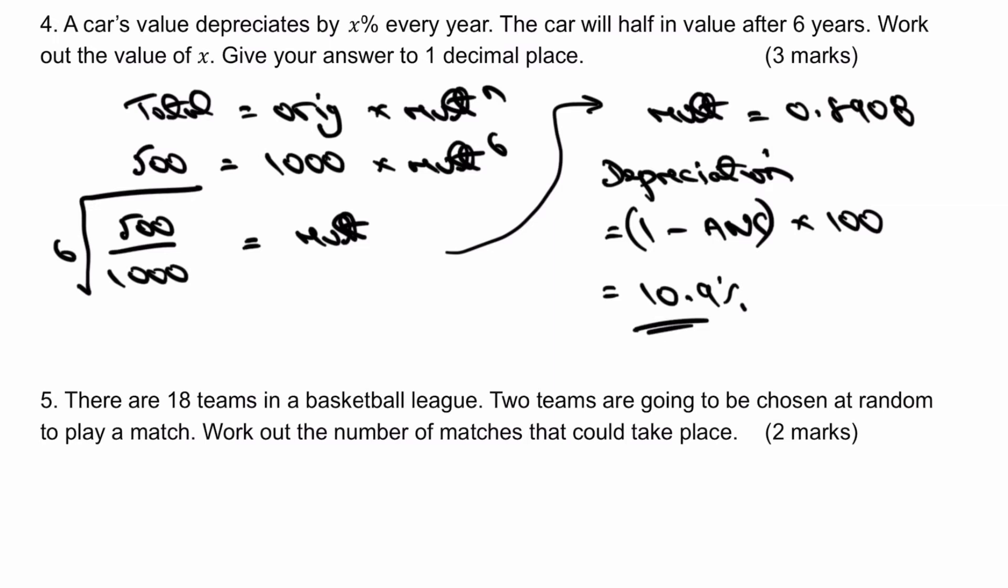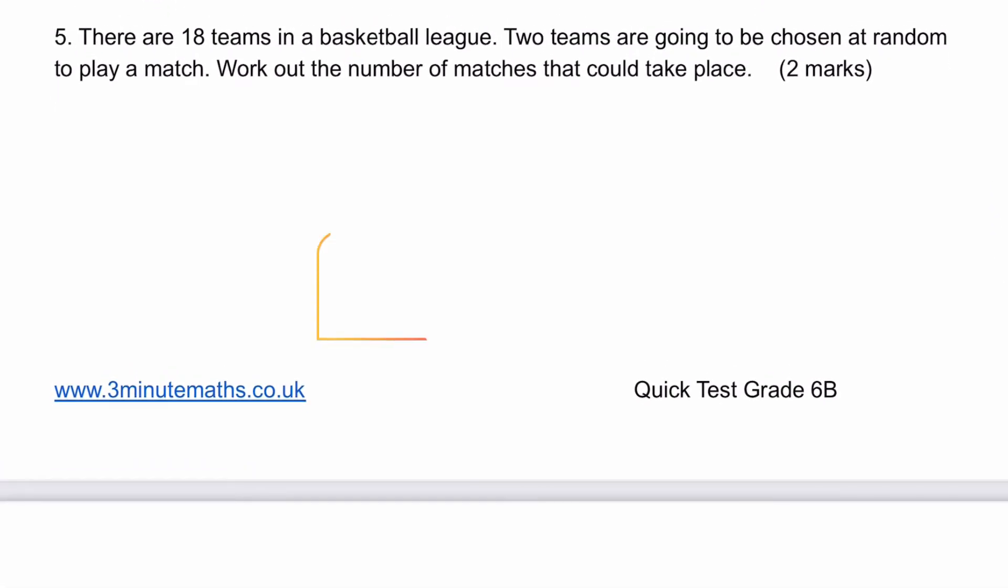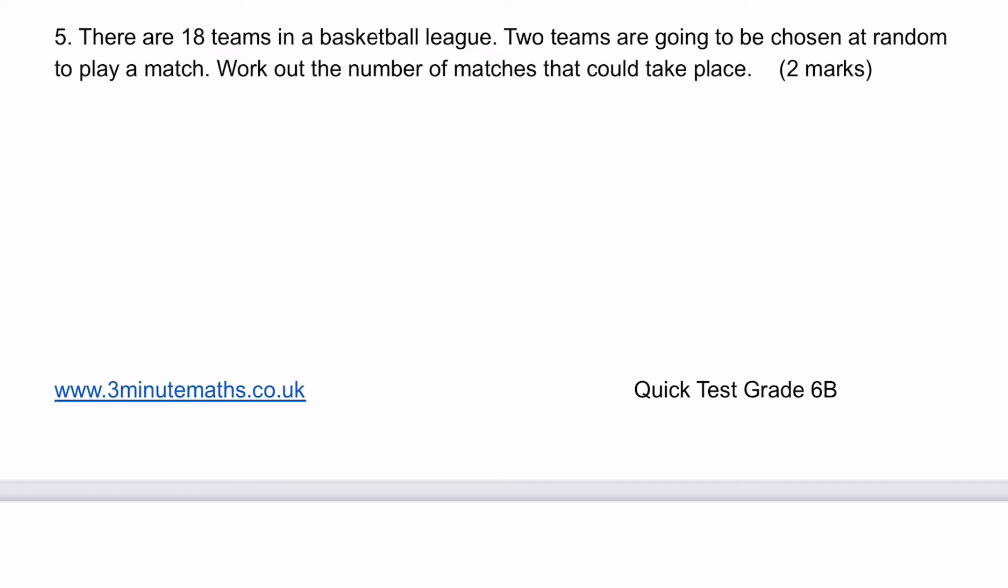Next one is question number five. There's 18 teams in a basketball league, two teams are going to be chosen at random to play a match. This is what they call counting strategies. Basically what we're saying is that if we have 18 teams, they've got a choice of 17 other teams to play. So team number 18 can play any one of the other 17 teams.